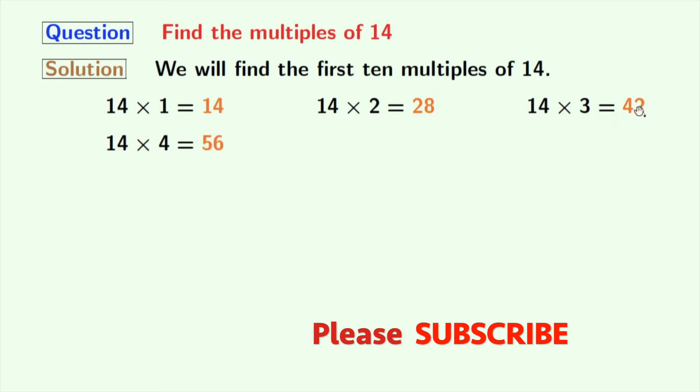Multiplication of 14 and 4 gives us 56. Multiplication of 14 and 5 gives us 70. If we multiply 14 with 6 now, we get 84.